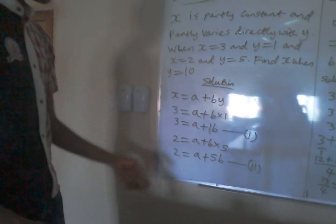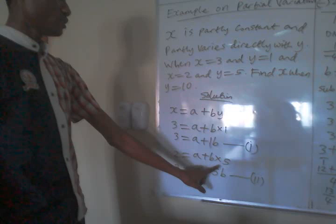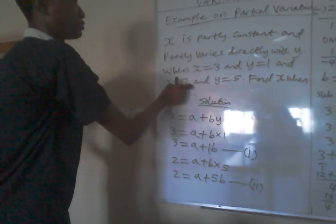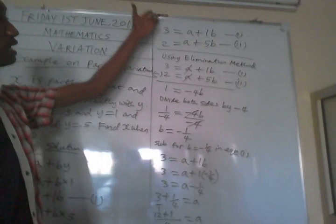The same thing with the second aspect. 2 is equal to a plus 5b, because our y is 5. When x is equal to 2, y is 5.